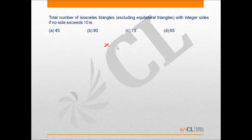Any side of the triangle can be anything between 1 to 10, and it is also known that these triangles should be isosceles, which means their two sides have to be equal.